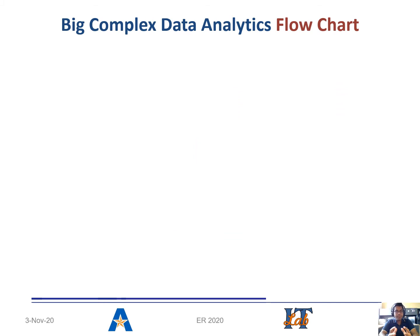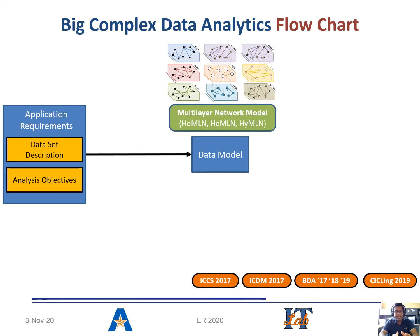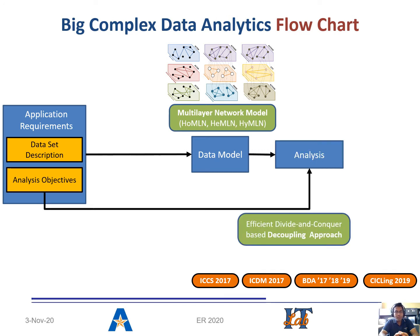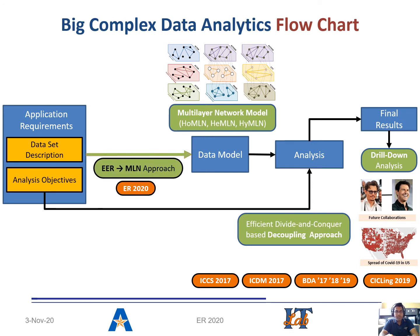But how do we address these kinds of problems? In these cases, we are given a few application requirements which comprise the description of the data and objectives. The first step is to find out the perfect data model. The literature proposes the use of the multilayer network model as the ideal choice, as it can handle both multiple entities and multiple relationships. The major bottleneck in this entire process is going directly from the requirements to the data modeling. The absence of a systematic approach makes this process difficult, error-prone, and not extensible. This is where the major contribution of our paper comes in.